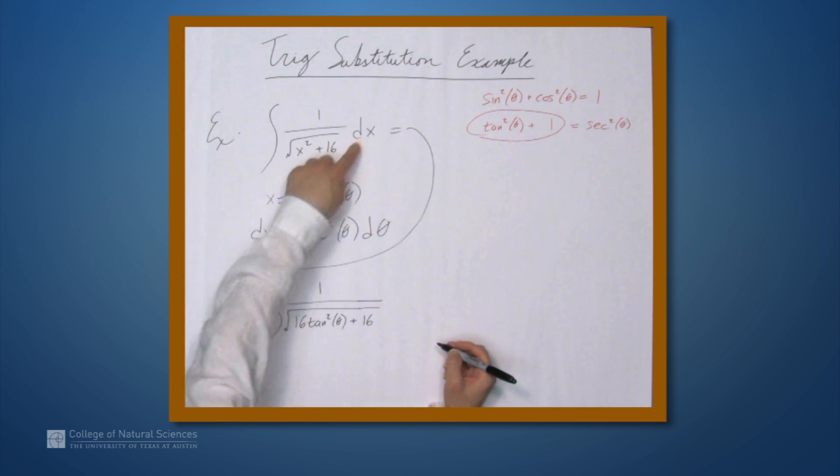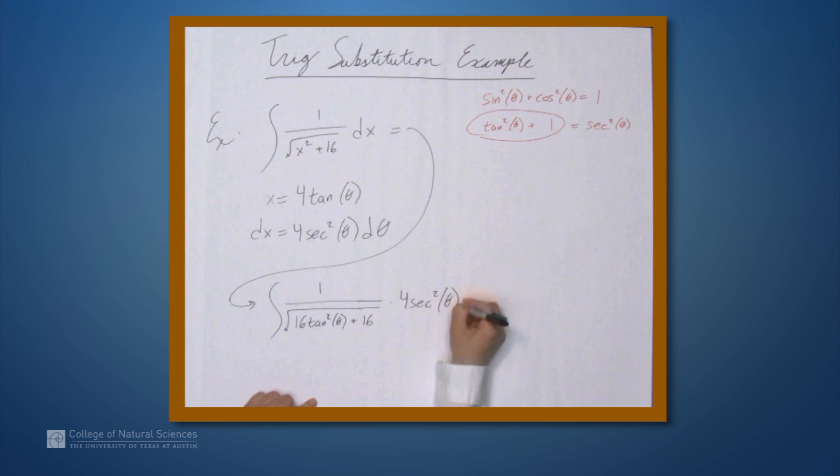And now we replace dx with this expression involving just theta. So times 4 secant squared theta d theta. And now we need to simplify.